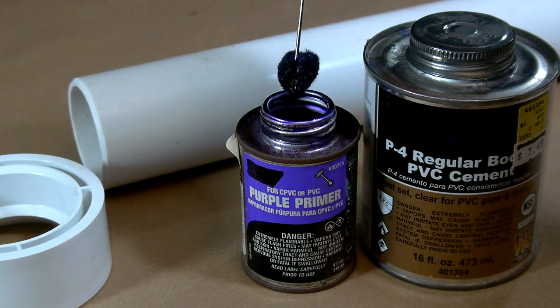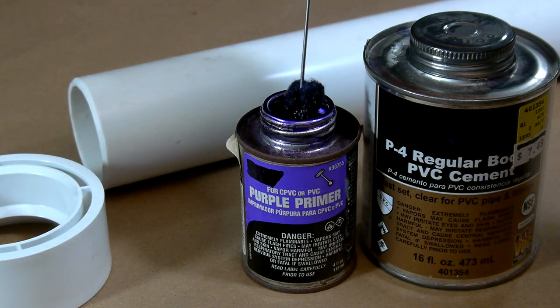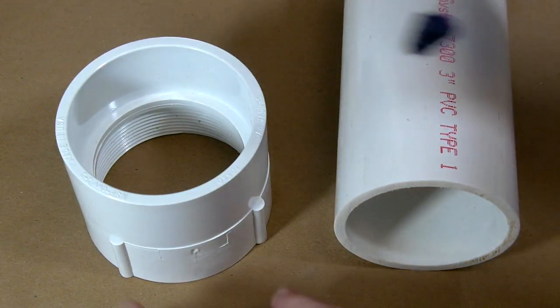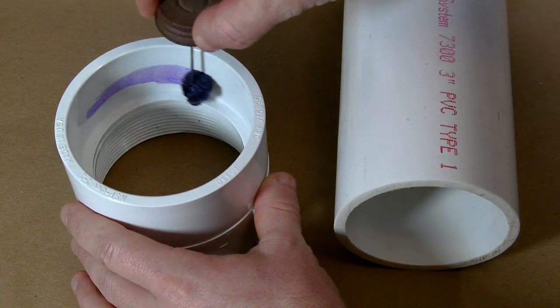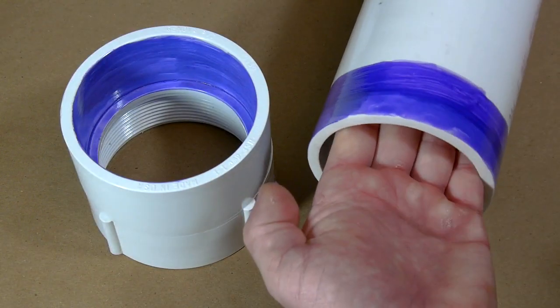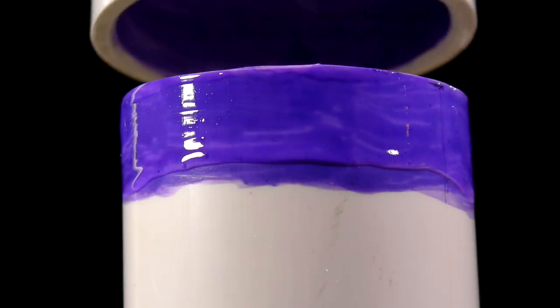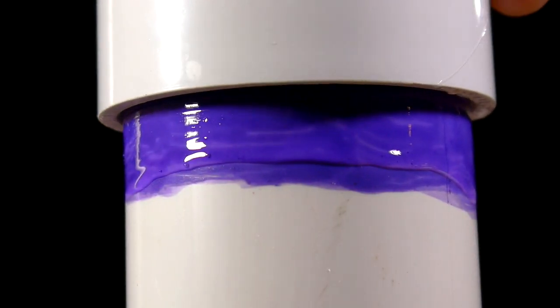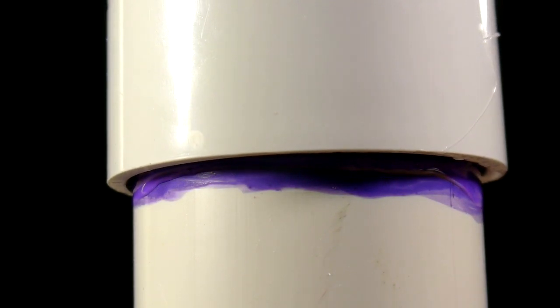First, using PVC primer and a healthy coat of PVC cement on both the pipe and fitting, a threaded female adapter is pressed onto one end of the 3 inch pipe. Twisting the fitting a quarter turn quickly before the glue dries will ensure that there are no leaks later on.